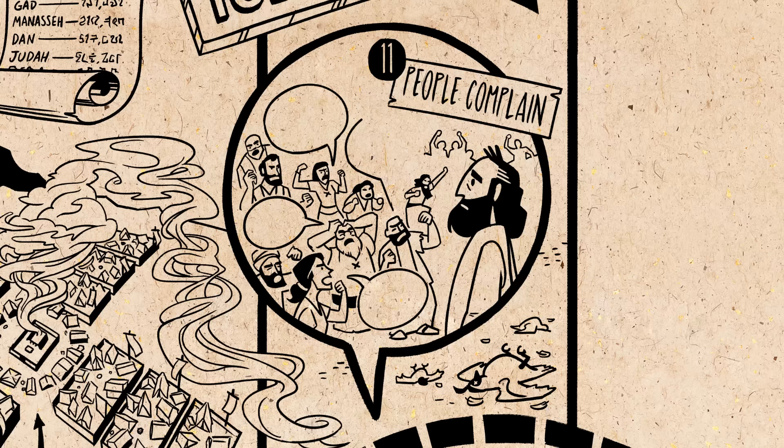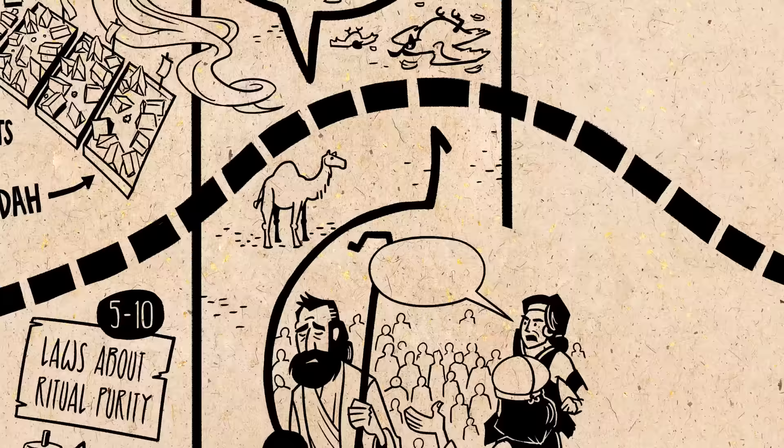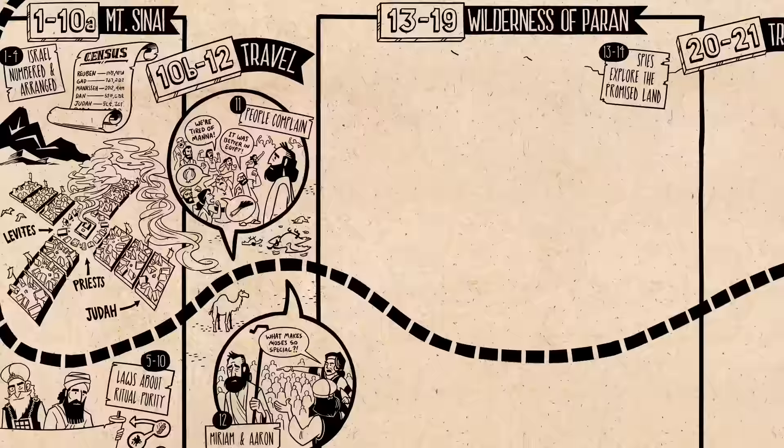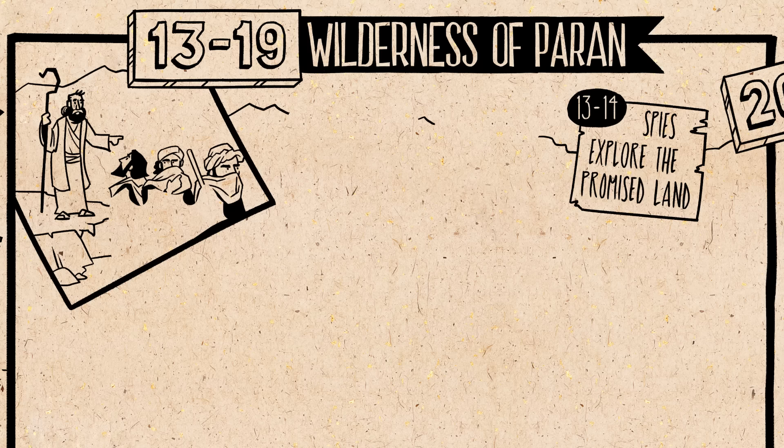In chapter 10, the cloud of God's presence lifts from the tabernacle and guides Israel away from Sinai out into the wilderness. And immediately things go terribly wrong. In chapter 11, the people start complaining about their hunger and thirst and how they want to go back to Egypt. And then in chapter 12, Moses' own brother and sister begin opposing and badmouthing him in front of all of the people. This trip is not off to a good start.